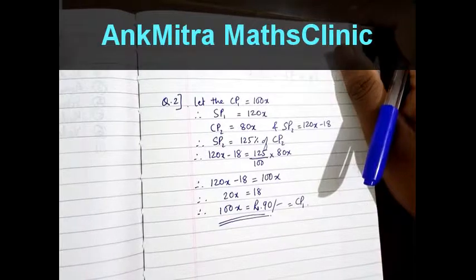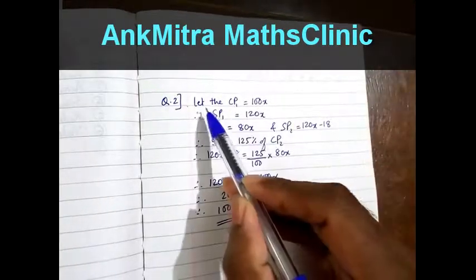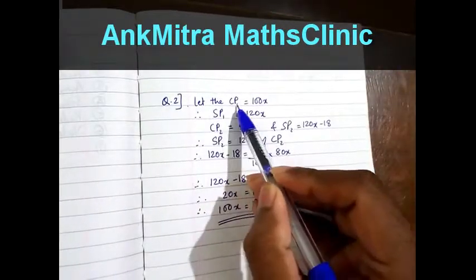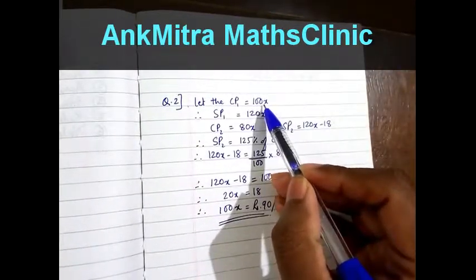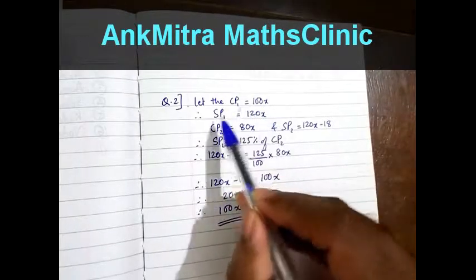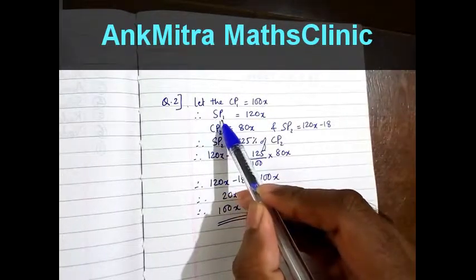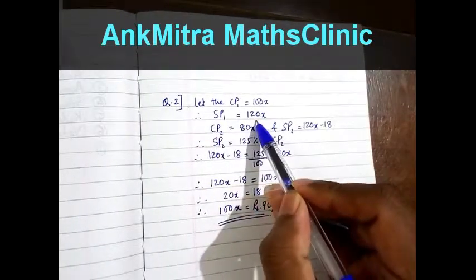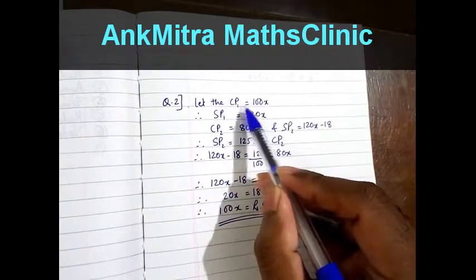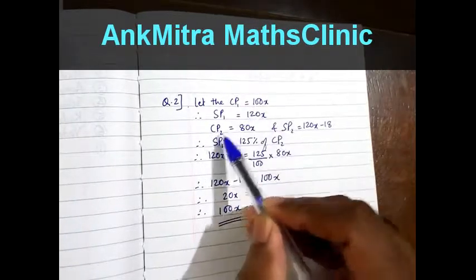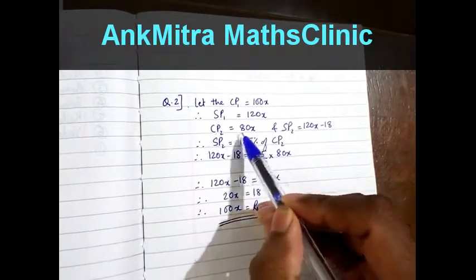Let CP1 be 100x. Since he made a profit of 20% on that, his SP1 will be 120x. In the second case, his cost price is 20% lower, therefore CP2 will become 80x.